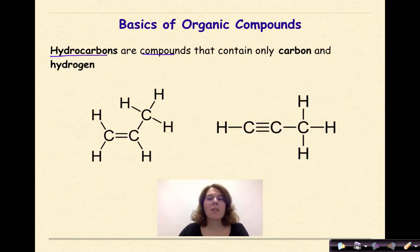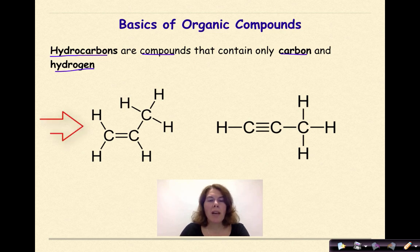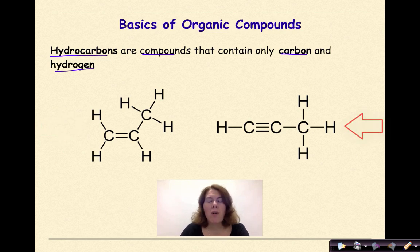Hydrocarbons are compounds that contain only carbon and hydrogen. So if someone refers to a hydrocarbon, the only elements involved in that compound will be carbon and hydrogen. We have two structures below. The one on my left has three carbons and six hydrogens, and the one on my right has three carbons and four hydrogens. They might have different structures associated with them, but they would both be called hydrocarbons.